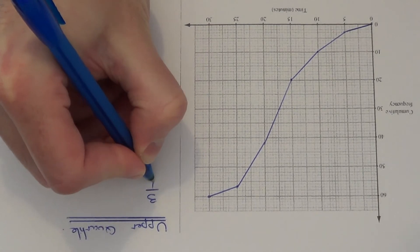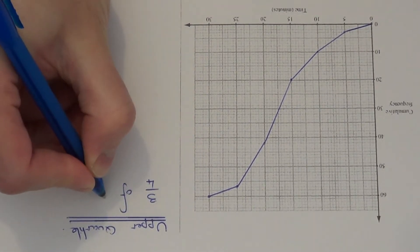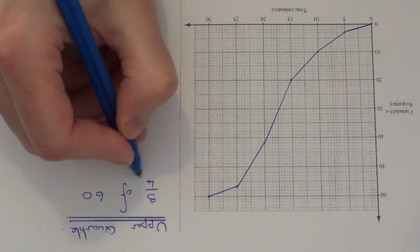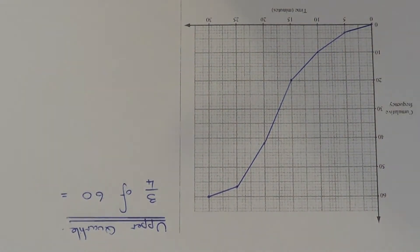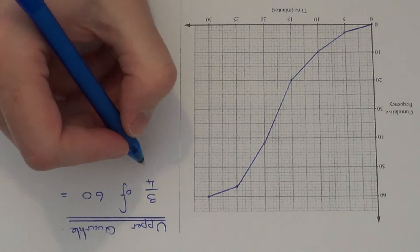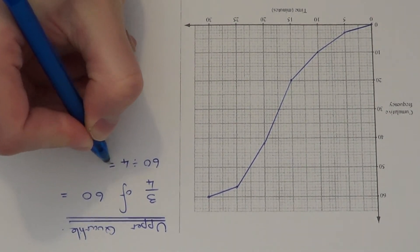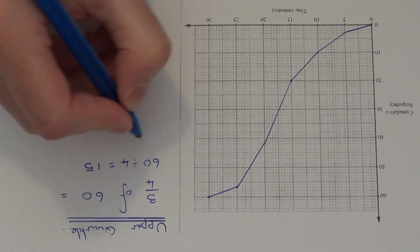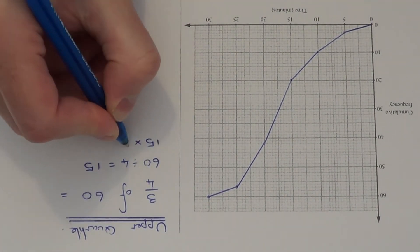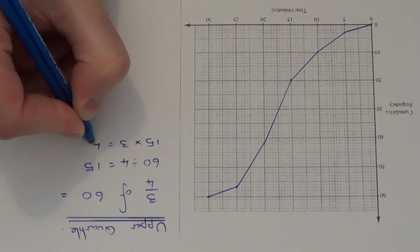So we need to do three quarters of 60 because this is where the upper quartile occurs at. So to work out three quarters of 60 you can do 60 divided by 4. So if you halve it and halve it that's 15 and then times that by 3, which is 45.